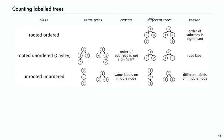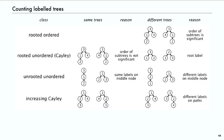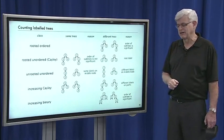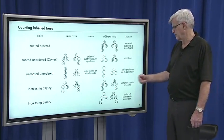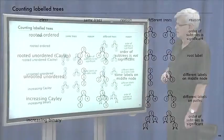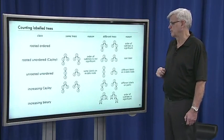There are applications for each type. If we take away the idea of a root, two trees would be considered the same if you can deform one to the other and they have the same labels on the middle node; but if they have different labels on the middle node, they're different trees. For increasing trees, the order is not significant, but labels on the paths must be increasing. So two trees are different if one path has labels 1, 2, 4 and another has 1, 2, 3. We'll also look at increasing binary trees where the order is significant and every node has zero or two children.